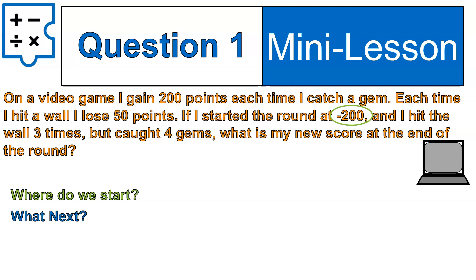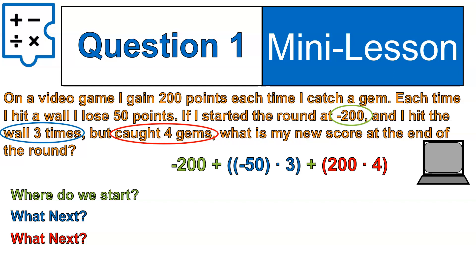Where are we starting? That's negative 200 — that's where I start at the very beginning. What's next? I hit the wall three times, and then I caught four gems. Those are the basic pieces of information. Instead of subtracting 50 three times, I just take that minus 50 from hitting the wall and multiply it times three, because it's happening three times. Same with collecting gems — I can multiply 200 times four. I do have to consider that I'm starting at negative 200, so I have to keep that in mind and then add on the additional things.